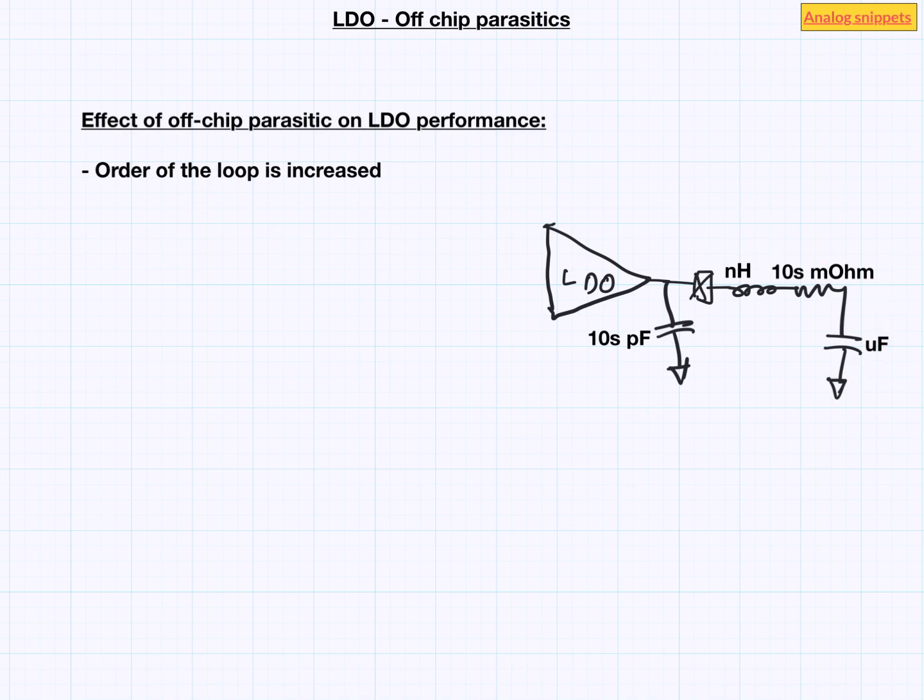Let us try to find the magnitude response of this parasitic network when looking from the side of LDO. The low frequency response will be dominated by this big capacitor here. So we will see minus 20 dB roll off at low frequencies. At certain higher frequencies, we will hit the zero because of this resistance. The zero will cause the magnitude response to flatten out. At still higher frequencies, we will hit another zero because of this inductance. And this zero will cause the magnitude response to rise.